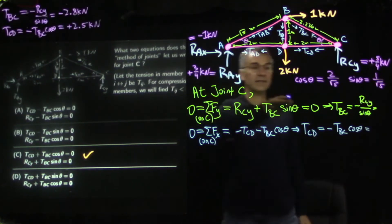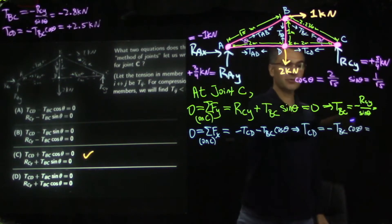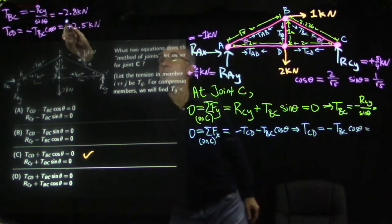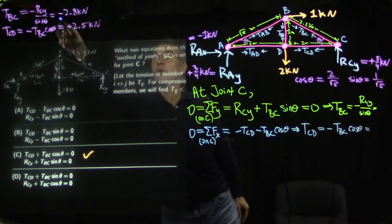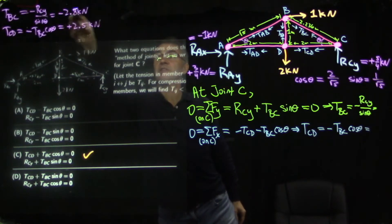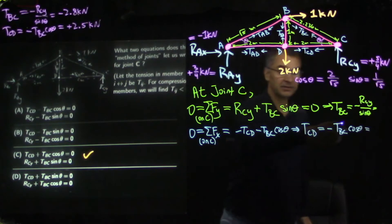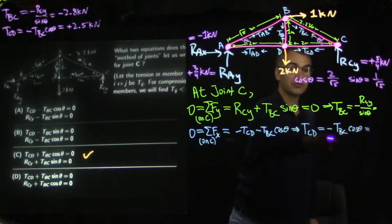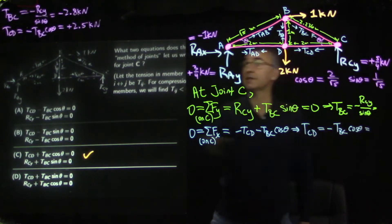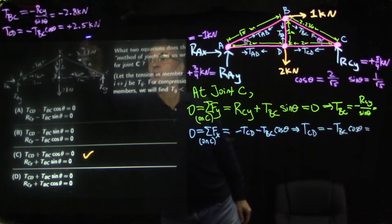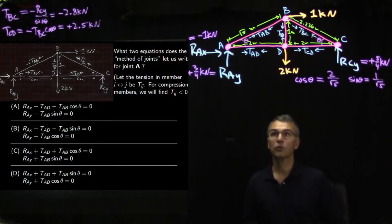Working out numbers: T-BC turns out to be minus 2.8 kilonewtons (approximately minus 2.795), and T-CD works out to be plus 2.5 kilonewtons, which is exact.